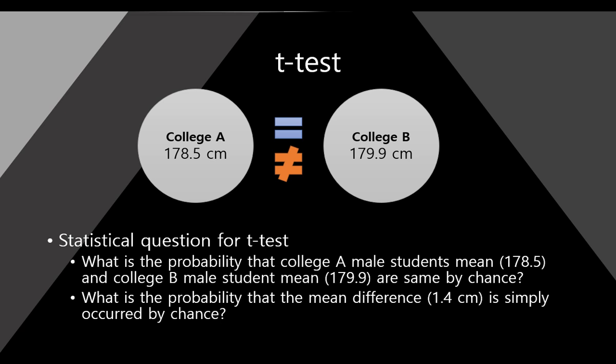The purpose of the T-test is to compare the homogeneity of two groups. In other words, we just want to know whether the two groups are the same or not. We also learned about the statistical question for T-test: what is the probability that the mean difference is occurred by chance?